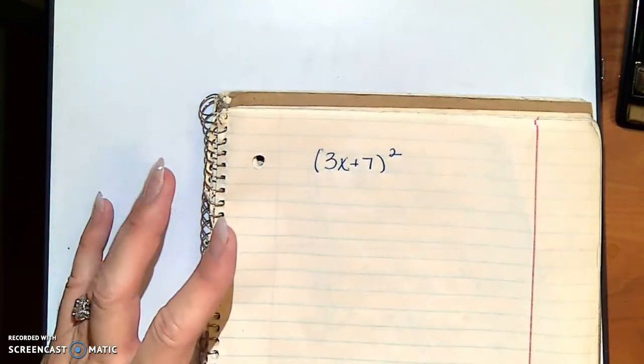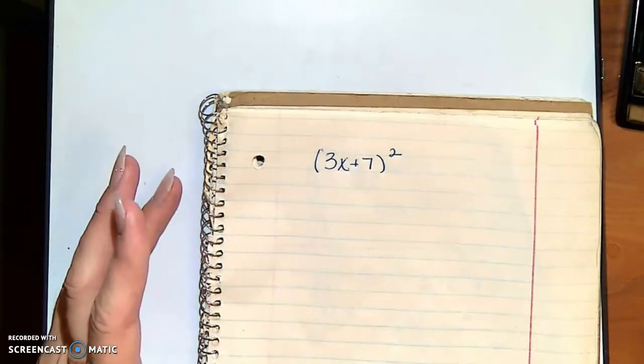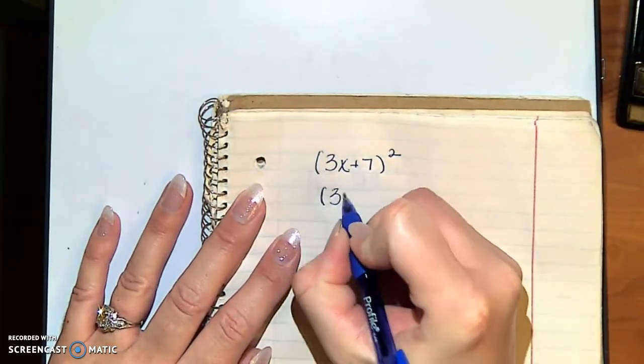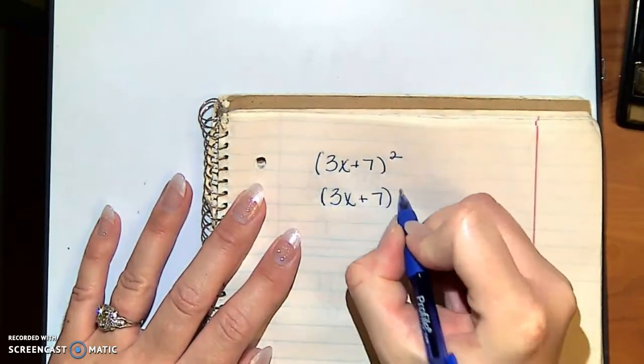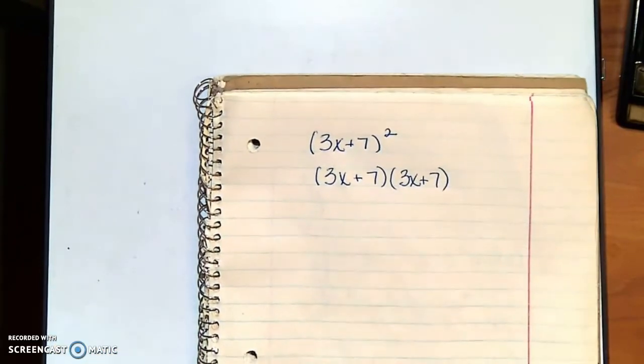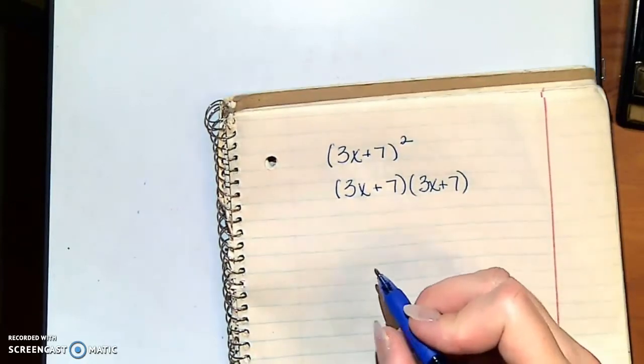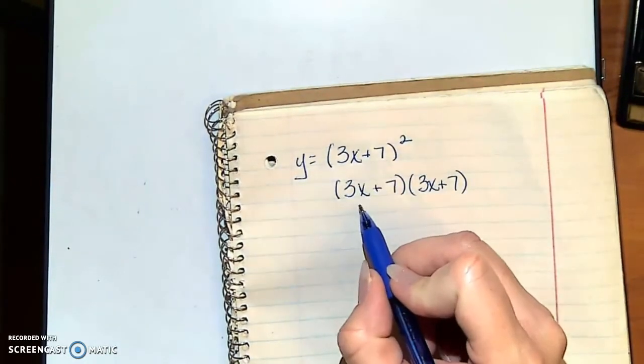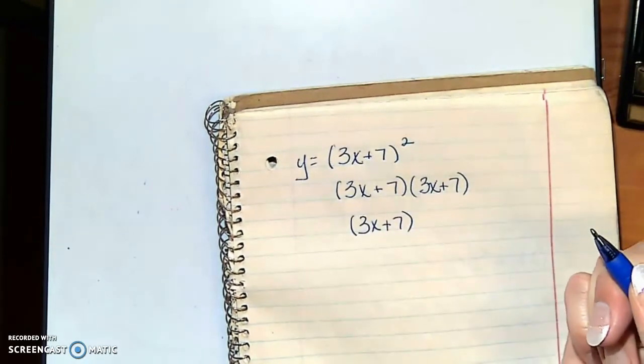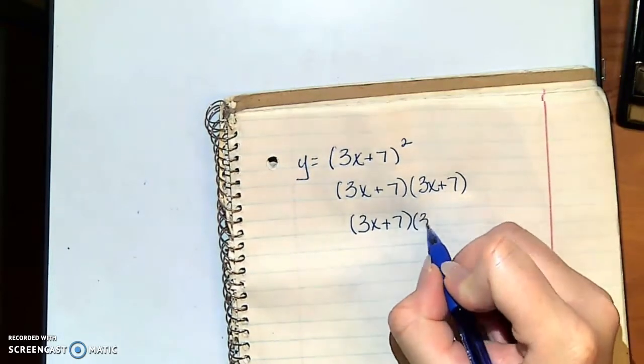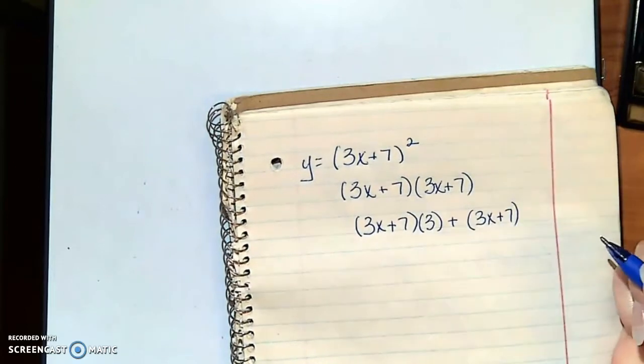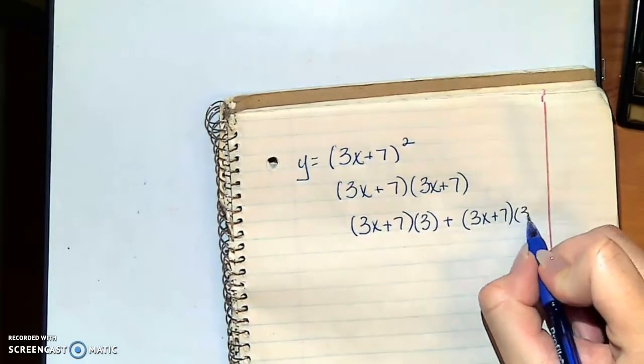So far when we're taking derivatives, I can approach this one of two ways. The first way is I can use product rule. I can rewrite this as 3x plus 7 times 3x plus 7 and use product rule on it. I would have the first, which is 3x plus 7, times the derivative of the second, which is 3, plus the second, which is 3x plus 7, times the derivative of the first, which is another 3.